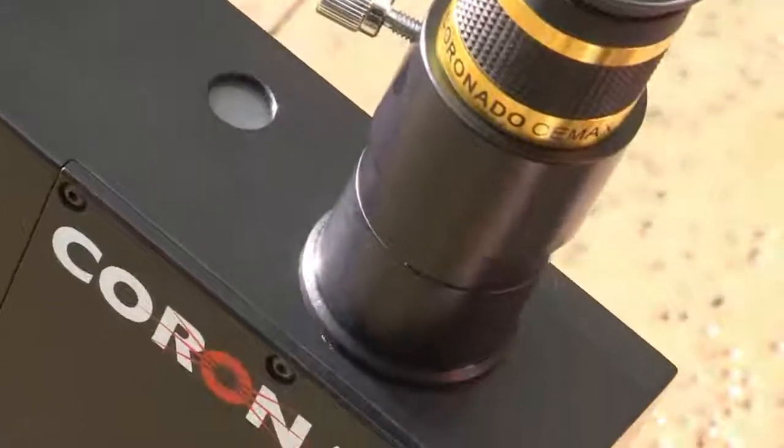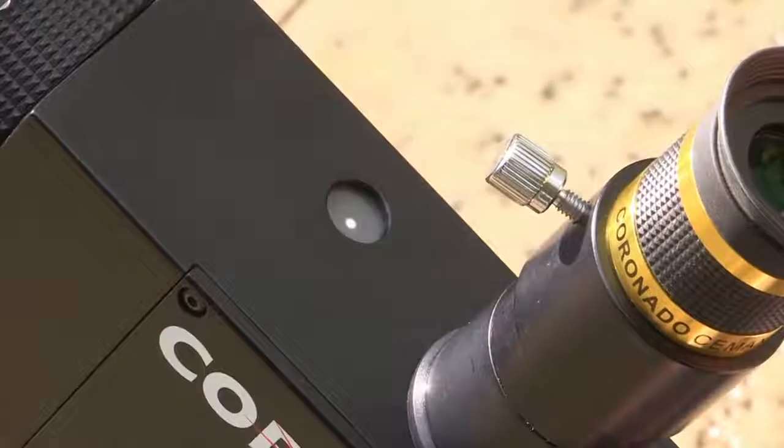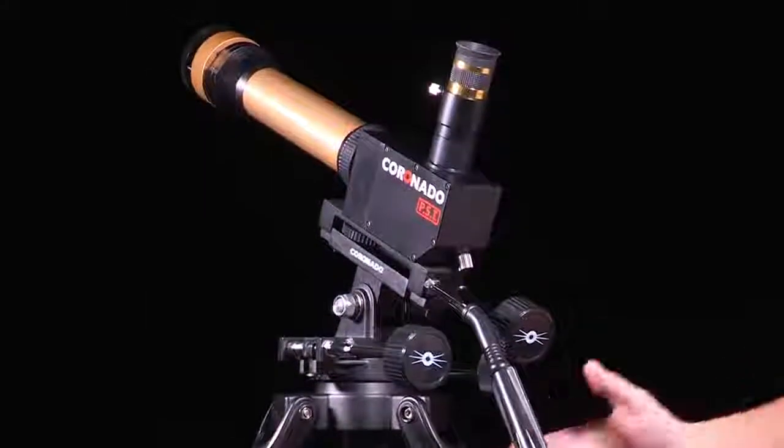The PST has been designed with a patented internal sun spotting device. When properly aligned on the Sun, a small pinhole on the front of the face of the PST body will let in light that will be projected onto the opaque glass window on the top near the eyepiece holder, making sun spotting a breeze.